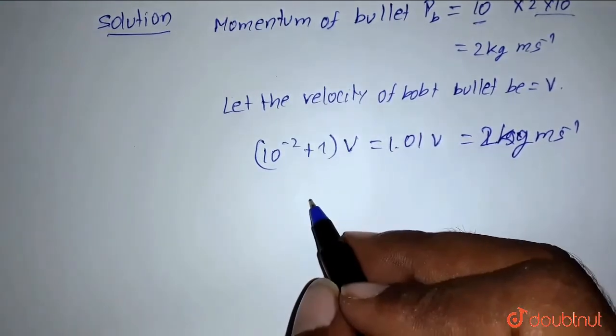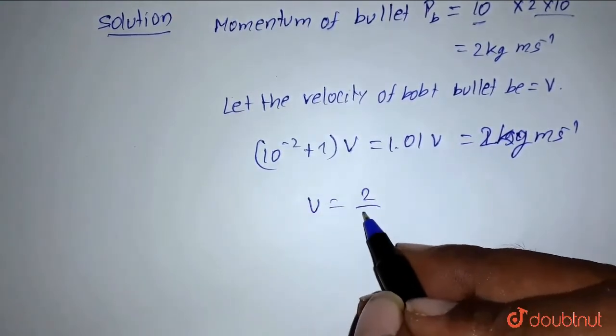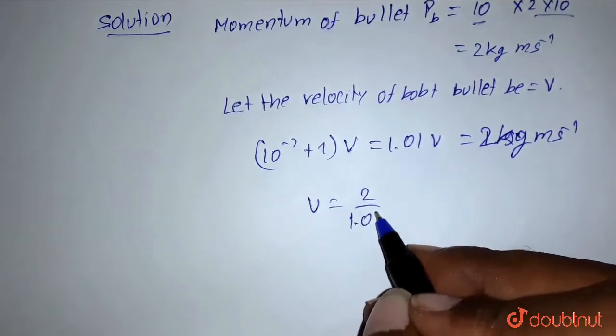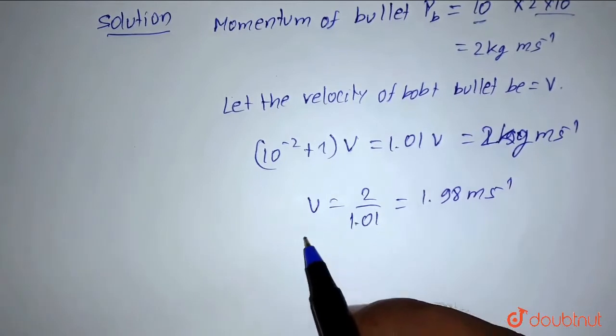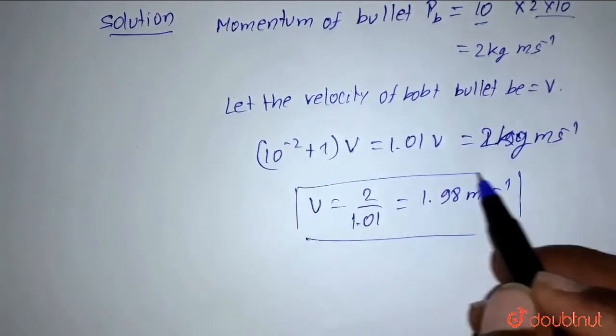From this we get V = 2/1.01 = 1.98 meters per second. This is the velocity of the bob plus bullet.